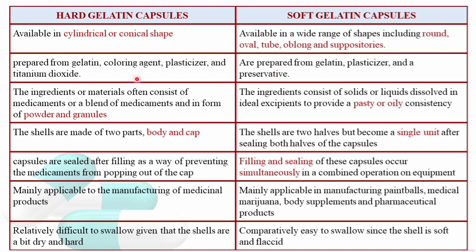Soft gelatin capsules are prepared from gelatin, plasticizer, and a preservative. The fill material for hard gelatin capsules — the API and other excipients — must be in powdered or granular form. For soft gelatin capsules, solids and liquids are first dissolved in suitable excipients to give a pasty or oily consistency, and these are then enclosed in the soft gelatin capsule shell.